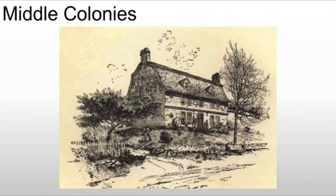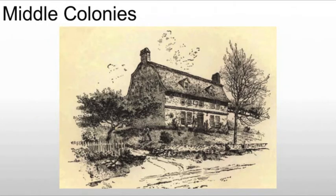When we get into the middle colonies, where we have a lot of Welsh, Scottish, and Dutch people coming in, they're going to be more comfortable using stone construction. We're going to see homes with, for example, that split roof and the end chimneys — very much Dutch colonial in form. And of course, we're going to see a lot of Dutch immigration into the middle colonies.